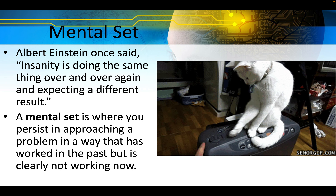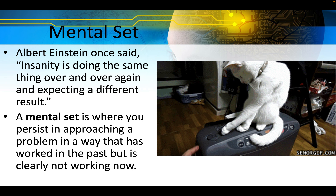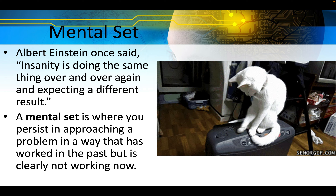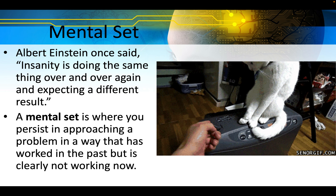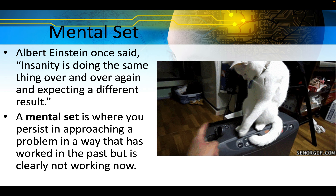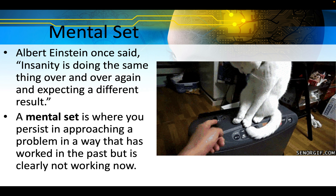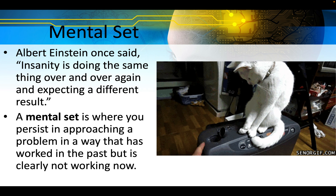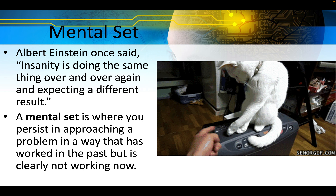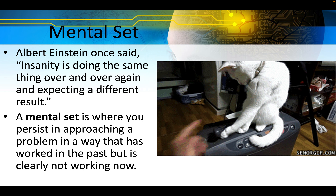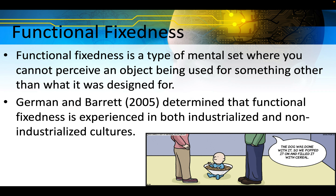Albert Einstein once said, 'Insanity is doing the same thing over and over again and expecting a different result.' A mental set is where you persist in approaching a problem in a way that has worked in the past but is clearly not working now. Functional fixedness is a type of mental set where you cannot perceive an object being used for something other than what it was designed for.